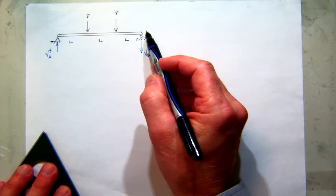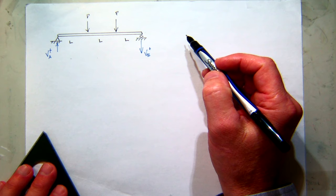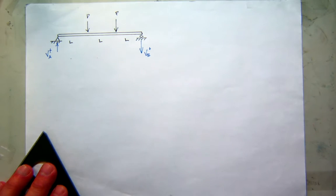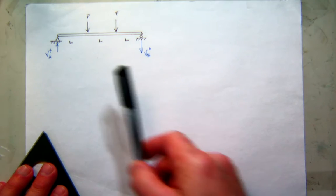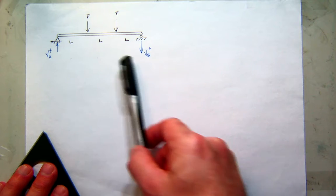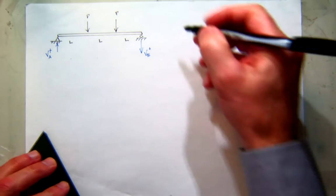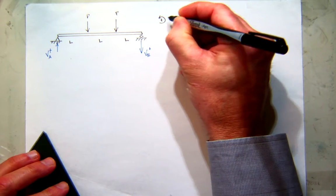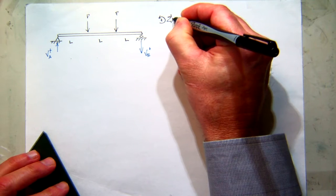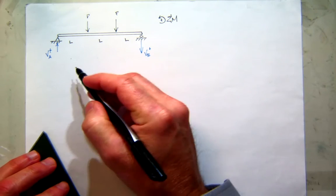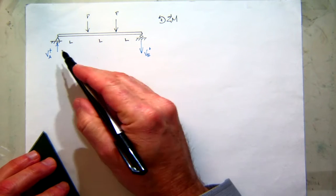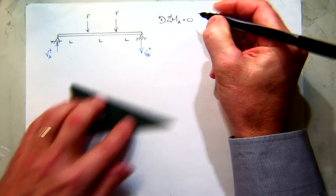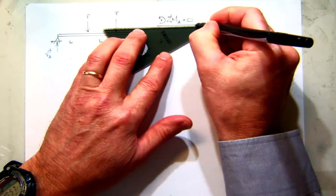Now these are both pins, so what's the moment going to be? Zero — so I don't have to worry about those. The first thing I want to do is solve for the shear at A and the shear at B. I'll do that by summing moments. I'll just pick one point — I'll sum moments at A — and we'll make sure that that's in equilibrium.